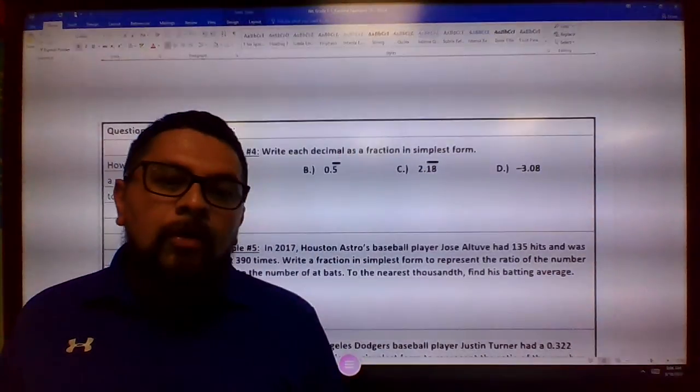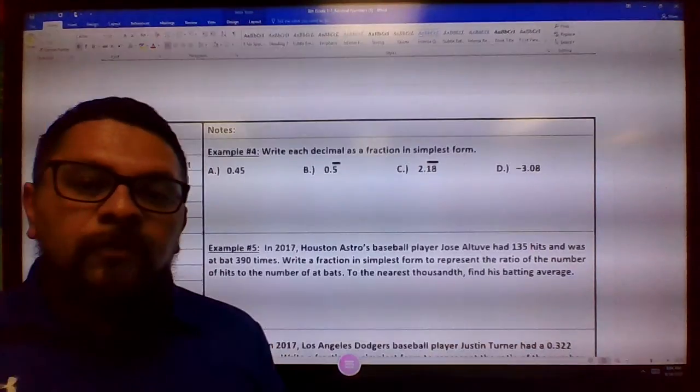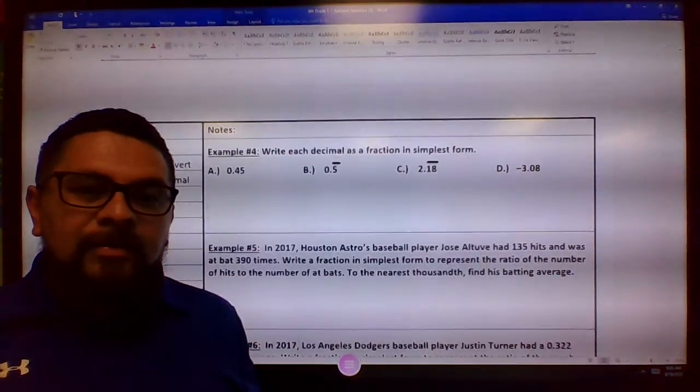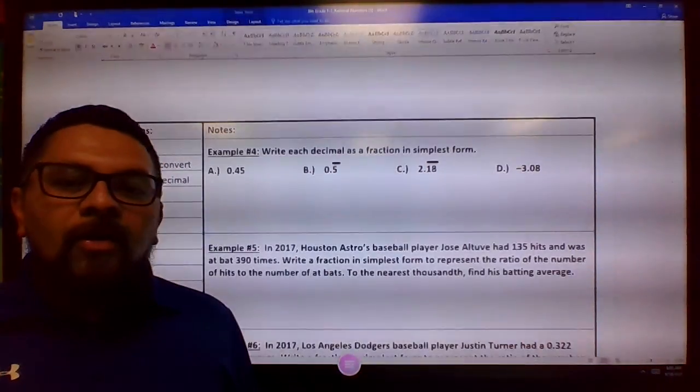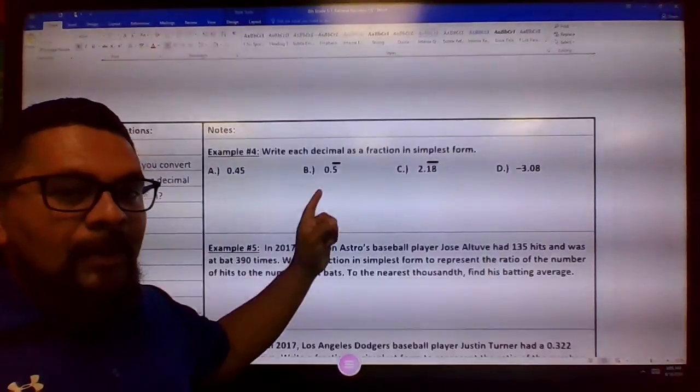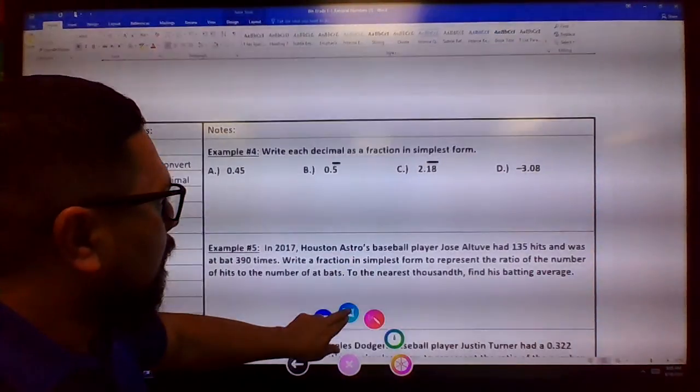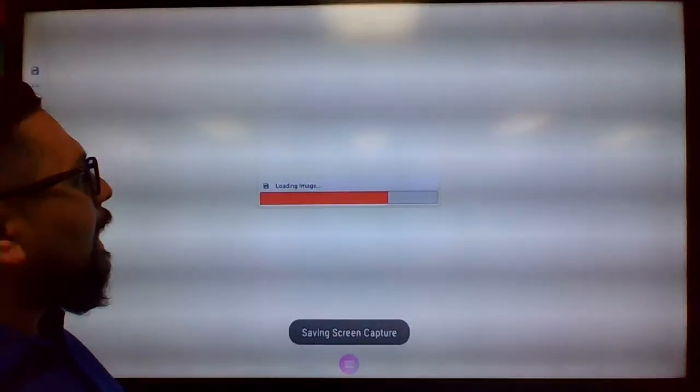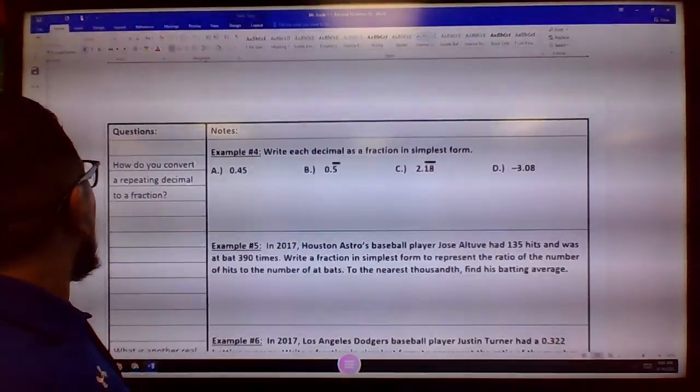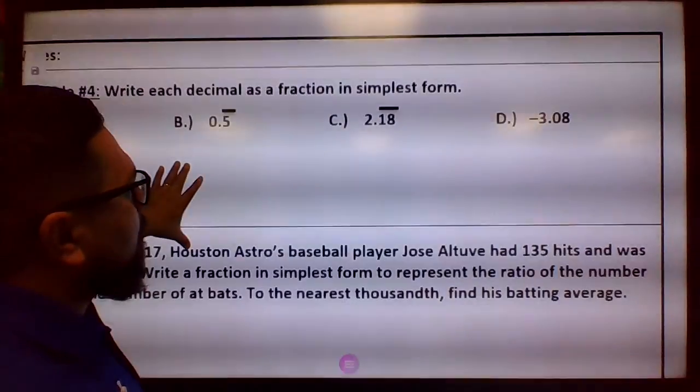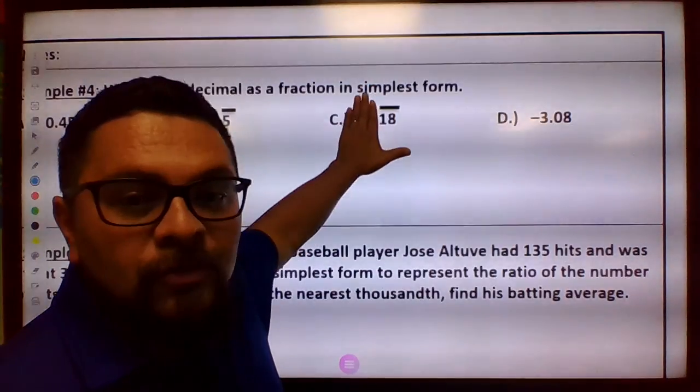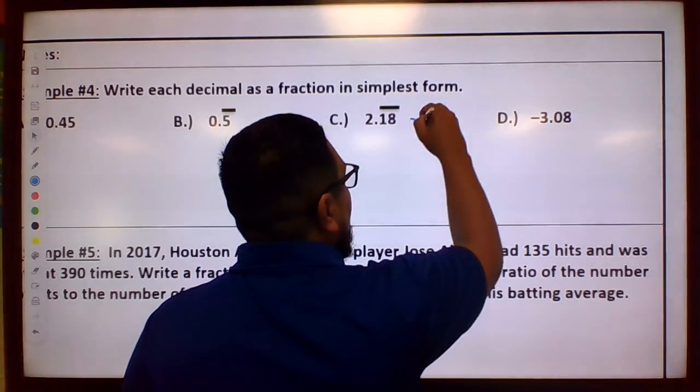Hi class, this is Mr. G. So I know I was gonna let you go ahead and do 4C and D, but I'll guide you a little bit more on how to do C. It's a little bit more difficult. D should be easy. We already did A and we already did B, so let's go ahead and go on to C. C says that we have to write this decimal as a fraction in simplest form. So for C, for now ignore the 2, just write it like this.